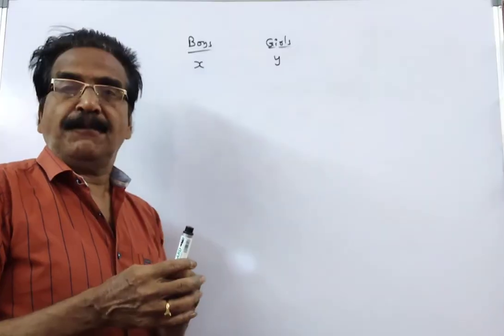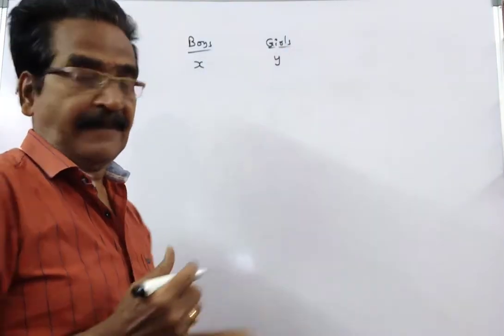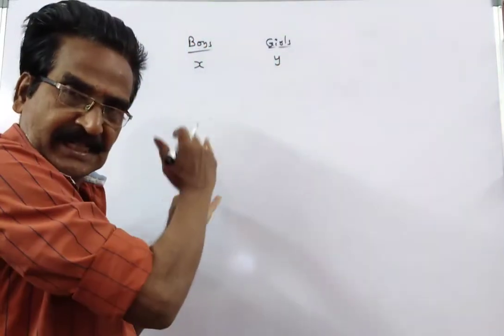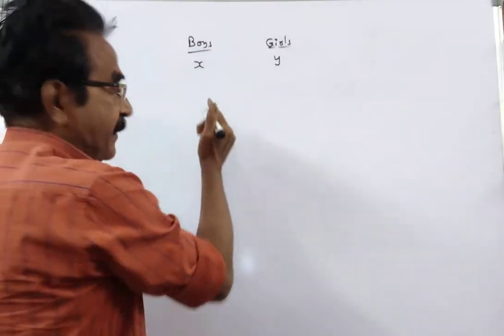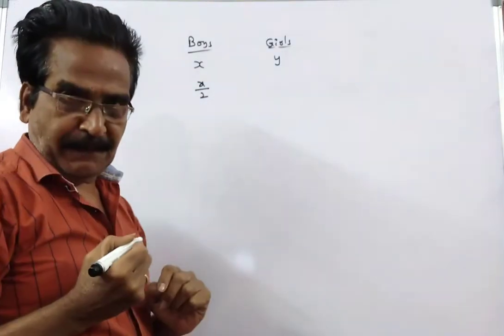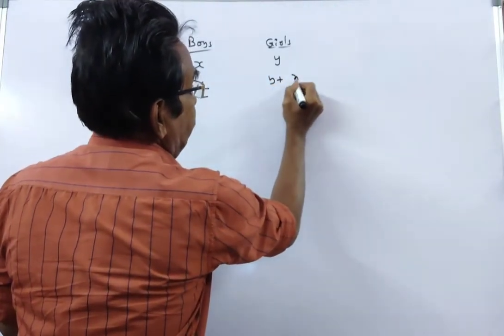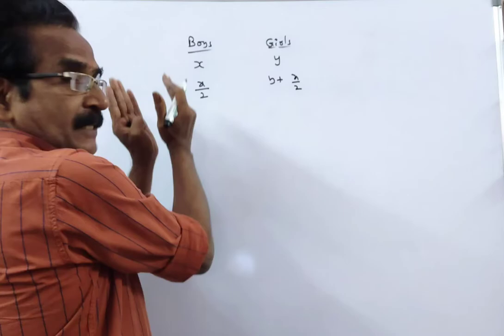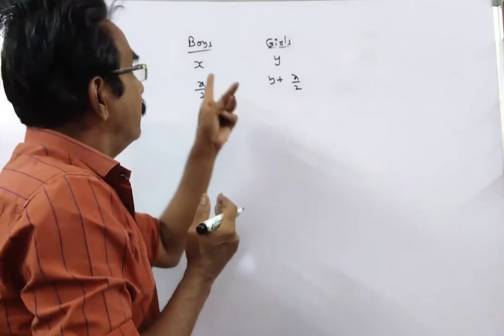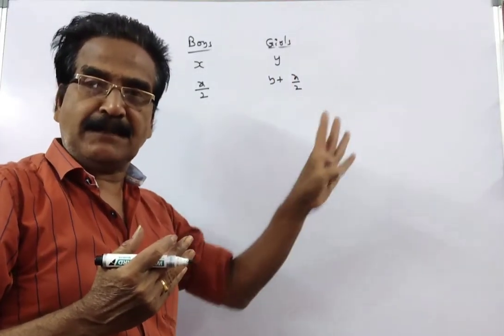Say friends, the number of boys is X and the number of girls is Y. If 50% of the boys were girls, then the position of boys and girls will be: the boys will be X by 2 only, and girls will be Y plus X by 2.